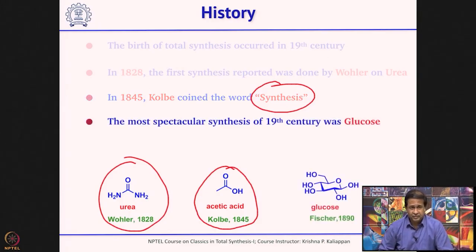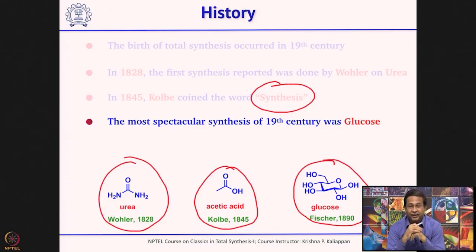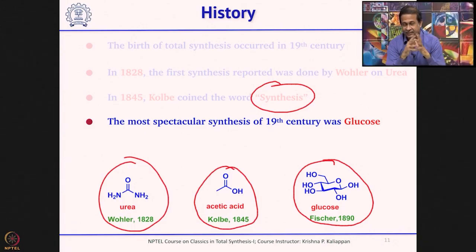In the 19th century, the most spectacular synthesis was reported by Fischer, who made glucose — that was the first time a natural product with chiral centers was synthesized. It was a spectacular landmark synthesis in the history of synthesis. So the three great landmarks of the 19th century are: first, Wöhler's urea; then Kolbe's acetic acid, who also coined the word 'synthesis'; and towards the end of the century, Fischer made glucose with 5 chiral centers.